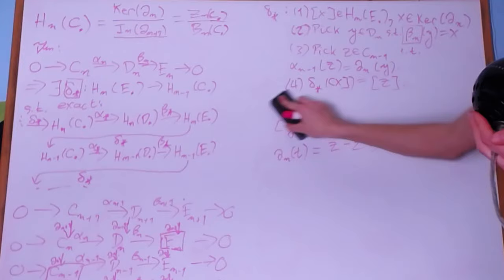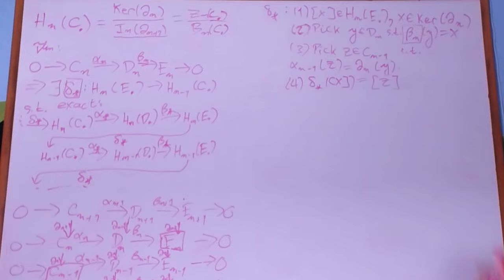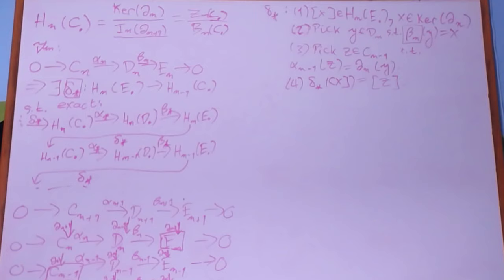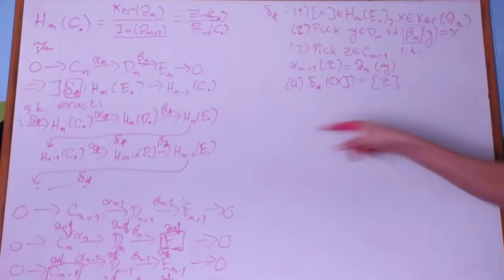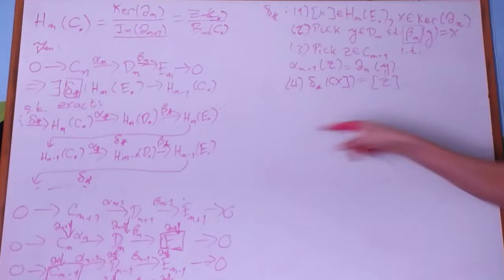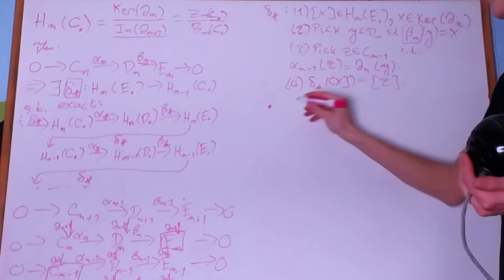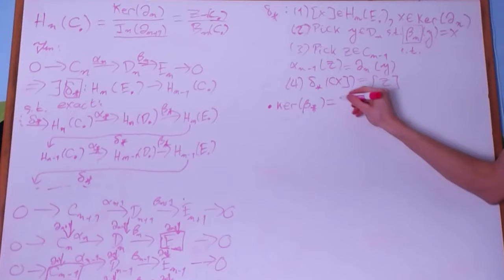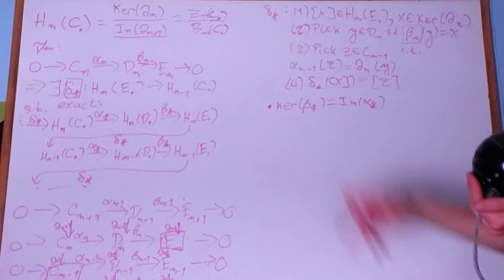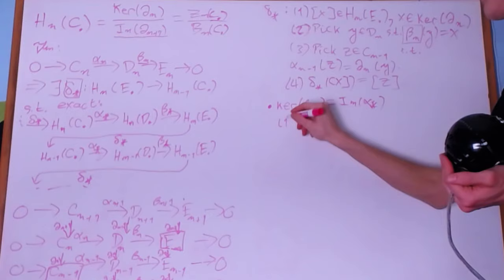δ* is also a homomorphism — that's extremely easy, just using the fact that each of the constituent maps are individually homomorphisms. The hardest part is proving the exactness of the long sequence. I'll prove it at one point: at H_n(D), proving that the kernel of β* equals the image of α*.